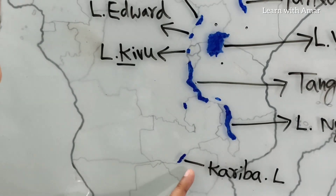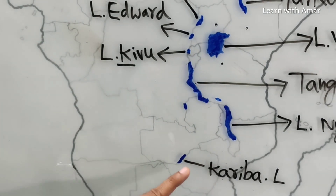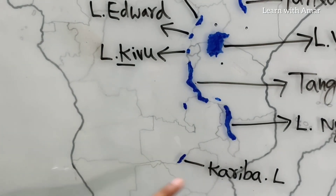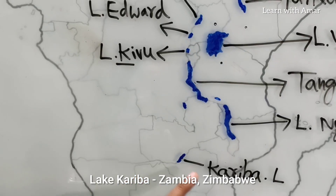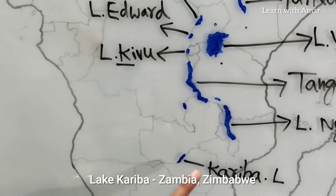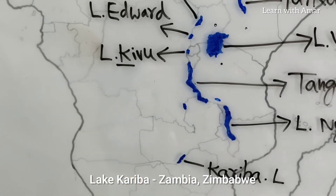Now see the location of Lake Kariba. It is located between two countries: Zambia and Zimbabwe.